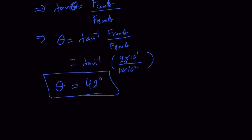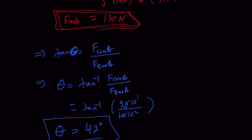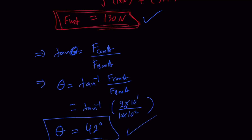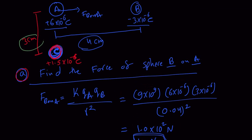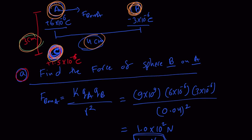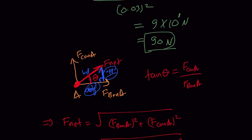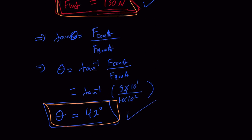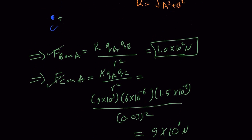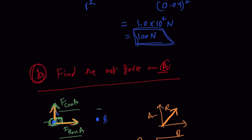So theta is 42 degrees, meaning the net force is 130 newtons acting at 42 degrees. With charge B to the right of A and charge C below A at the specified distances, sphere A experiences a net force of 130 newtons acting at this specific angle — an elaborate example of the application of Coulomb's law.